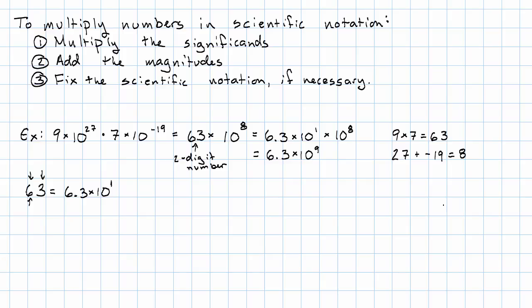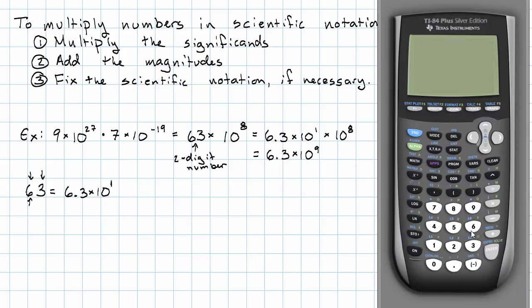Let's confirm that with the calculator, too. We have 9 times 10 to the 27th times 7 times 10 to the negative 19th. 6.3 times 10 to the ninth, just like we found by hand.